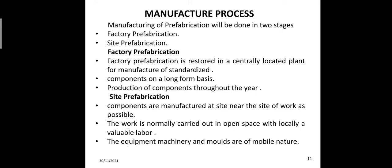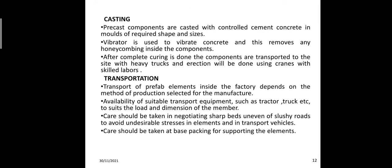In site prefabrication, components are manufactured at or near the site of work as possible. This work is normally carried out in open space with locally available labor. The required machinery and molds are of a mobile nature. Precast components are cast with controlled cement concrete in molds of the required shape and size.